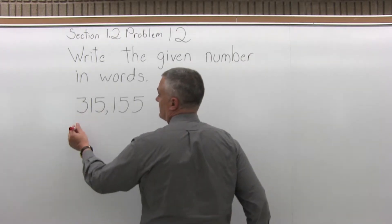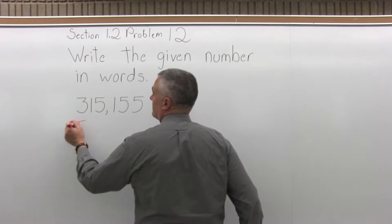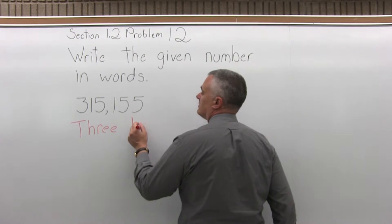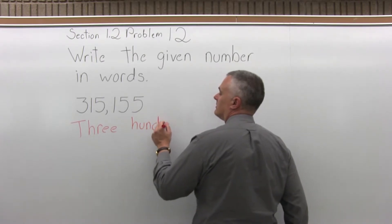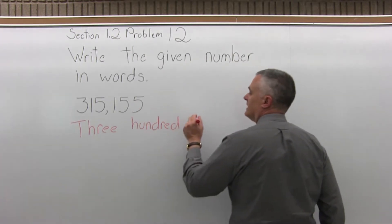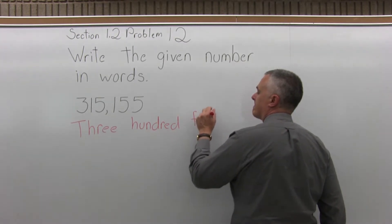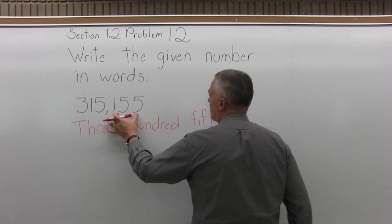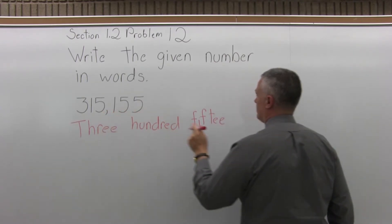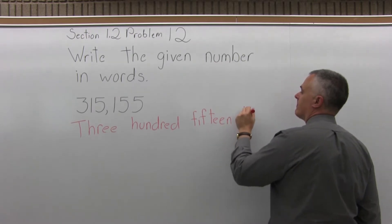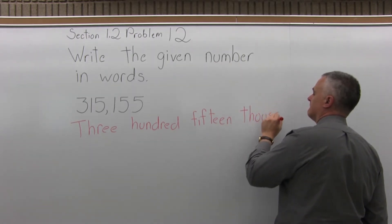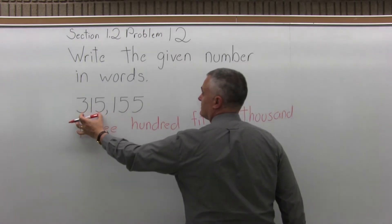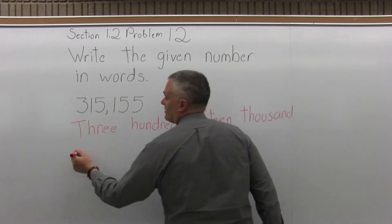So, start with the 315. I will write 315, and I can't write 155 in words yet — I have to put "thousand" after 315. So now I have 315,000 — that's the first three digits — and now 155.